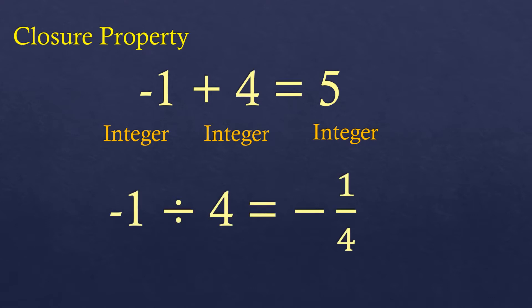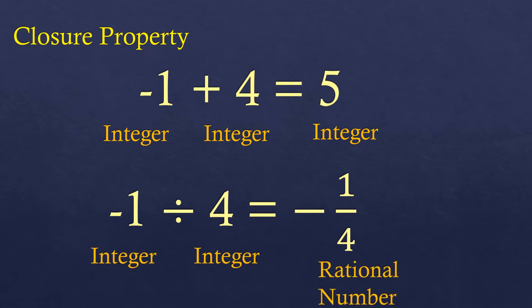Except for division — because when we divide negative one by four, those are two integers, but the result is a rational number, which is not part of the set of integers. So the set of integers is not closed under the operation of division.